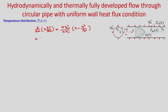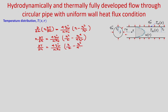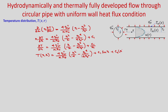Integrating once: r(∂T/∂r) = (4q″_w)/(kR₀) · [r²/2 − r⁴/(4R₀²)] + C₁, giving ∂T/∂r = (4q″_w)/(kR₀) · [r/2 − r³/(4R₀²)] + C₁/r. Integrating again: T(x,r) = (4q″_w)/(kR₀) · [r²/4 − r⁴/(16R₀²)] + C₁ ln r + C₂(x).